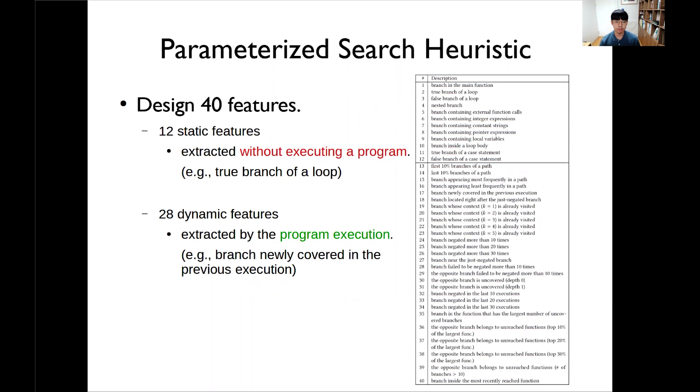In this work, we have designed 40 features. We can classify 40 features into static and dynamic features. A static feature can be extracted without executing a program. For example, we can statically know whether the branch is a true branch of a loop or not. Dynamic features can only be extracted by actual program execution. For example, without execution, we do not know whether the branch is newly covered in the previous execution or not. Using these predefined 40 features, we can transform all branches in the current execution path as feature vectors.